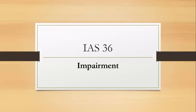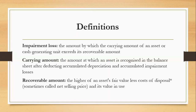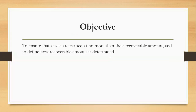In this lecture, we will talk about IAS-36, that is, impairment of non-current assets. As far as impairment is concerned, it is applicable on many assets, but primarily, we have already studied IAS-16 property, plant, and equipment, as well as IAS-38 intangible assets. So, you have to apply IAS-36 on both tangible assets and intangible assets.